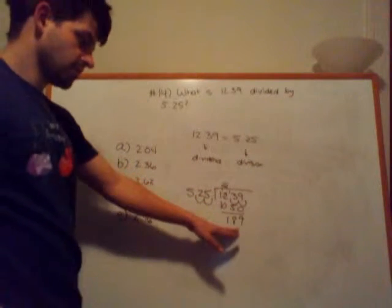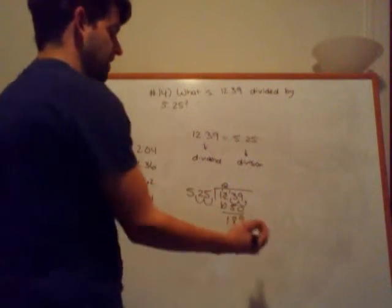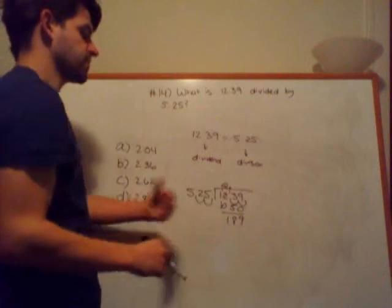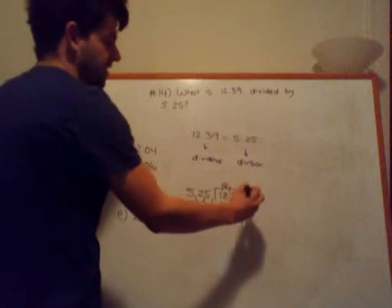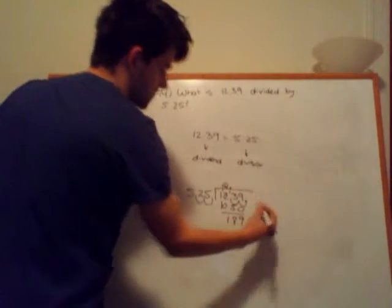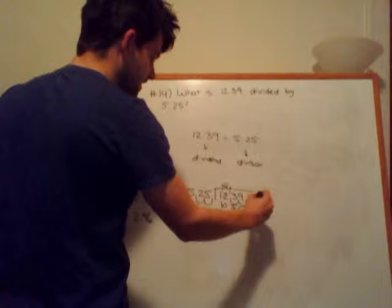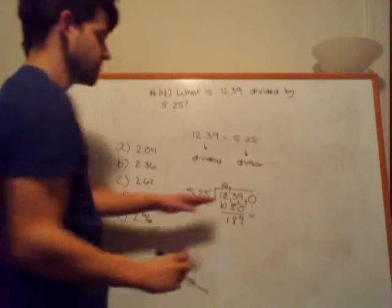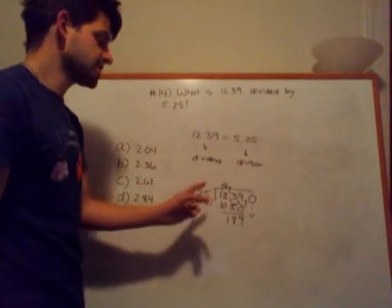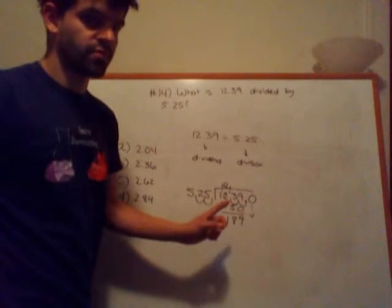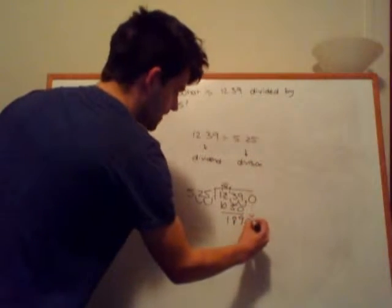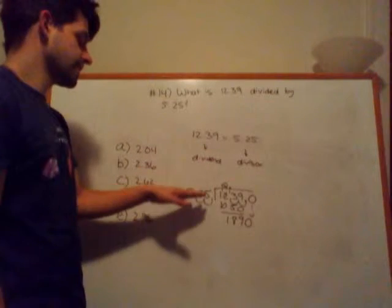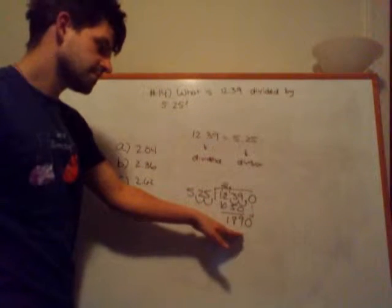Now, 525 can't go into 189. But what I can do to figure out how many times it can go into the rest of this value is if I put a decimal here, that infers this decimal here. And this allows me to add zeros, because 1239 is equal to 1239.0. So this will allow me to bring down a 0. So now I have to guess, and now I'm trying to figure out how many times 525 goes into 1890.